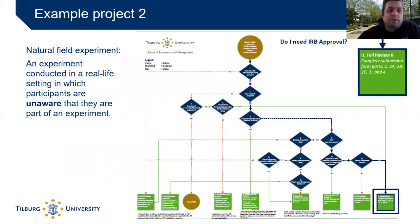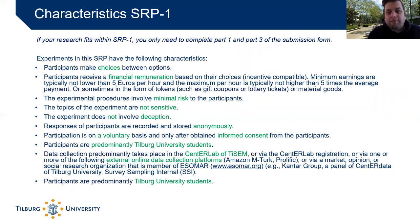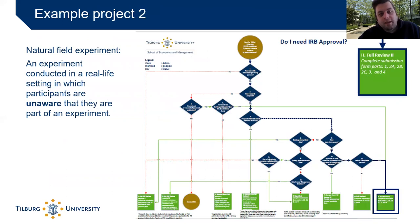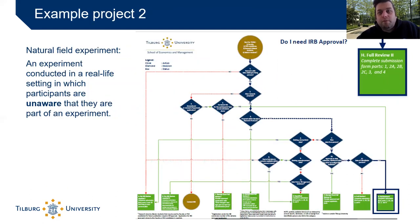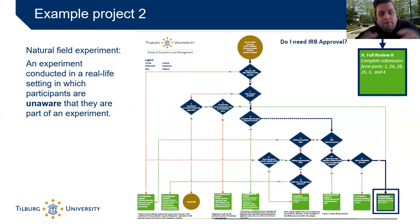A natural field experiment — an experiment conducted in a real-life setting in which participants are unaware that they are part of the experiment — cannot obtain informed consent, which is required under the standardized research protocol. So there may be more risk to participants, and for this proposal you might need a full review. Other examples of full review: you might want to test whether people are stressed and collect a saliva sample, or you are researching very sensitive issues like suicide or discrimination, which probably involve more intrusive questions and may not fall under standardized research.